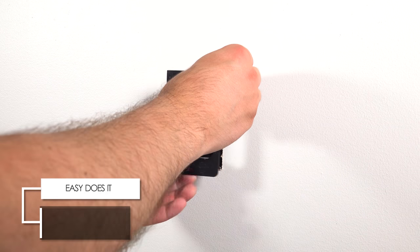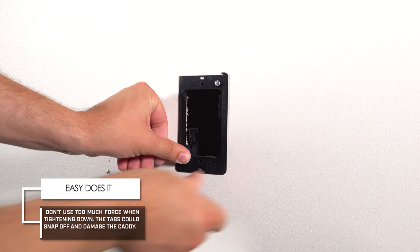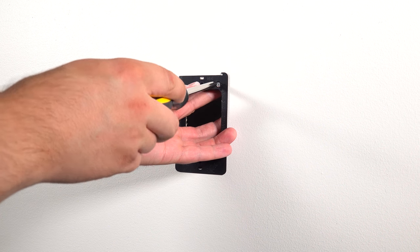Okay, after cutting the drywall away grab your caddy and insert it into the opening. Grab your screwdriver and tighten down the tabs, making sure they are behind the drywall and clamped down properly.